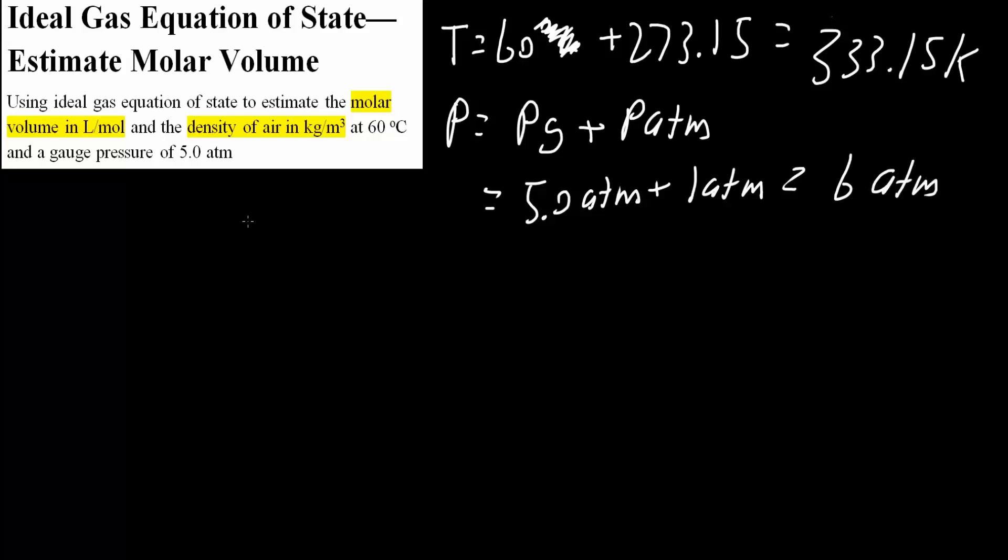Now we have the formula that PV equals nRT. Molar volume is essentially V over n. So we could say that P times V molar equals RT. We want to find V molar, which is V over n.